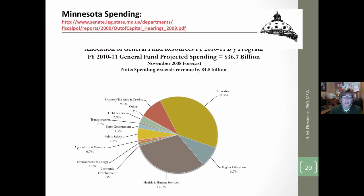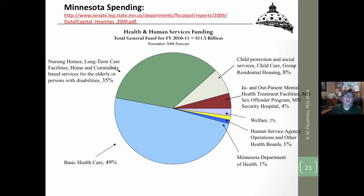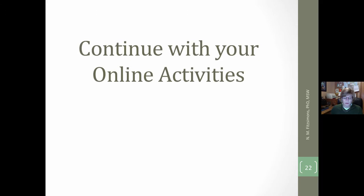This is a breakdown of state spending from fiscal year 2010-11, giving a sense of state spending. Look at the differences between where the federal government spends its money and where the state government spends its money by comparing the allocation of percentages. This is also a breakdown of the health and human services budget — note that only 2% goes to welfare spending, which includes public assistance, cash assistance, MFIP, general assistance, and food support. A very small percentage of the health and human services budget goes to actual cash assistance and in-kind benefits. Be sure to look at the handout provided for fiscal year 2016-17 general funding, spending, and revenue.